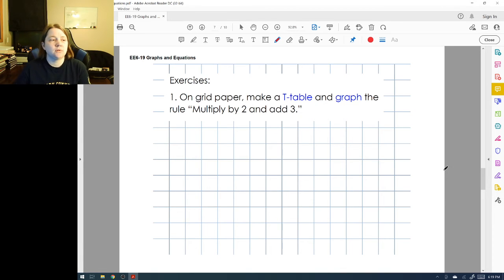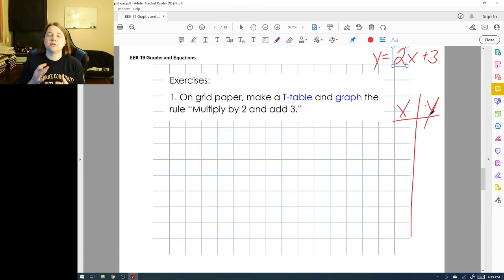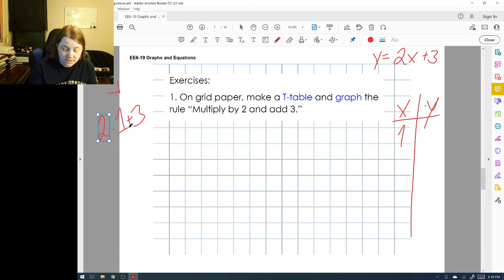They want us to make a t-table and graph the rule multiply by 2 and add 3. Well, I know that multiply by 2 would be 2x and add 3, I would put a plus 3 after it. So I want to make an xy chart. I'm going to try to keep all the work off to one side. So if I have 2x, if x is 1, that's going to be 2 times 1 plus 3. And 2 times 1 is 2, plus 3 is going to be 5. So when x is 1, y is 5.